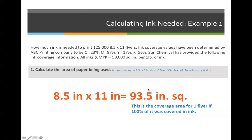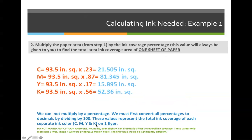However, we can't stop there because that assumes we are printing 100% ink coverage on the entire flyer, which we are not. So step two: we know we are going to print 23% ink coverage on cyan, 87%, 17%, 56%, etc. We need to multiply the paper area from step one by the ink coverage percentage for each color. This is where we have to do four separate calculations every time we do step two.